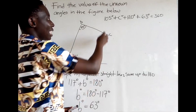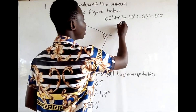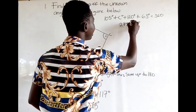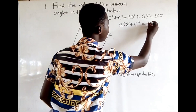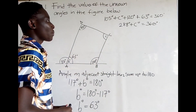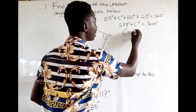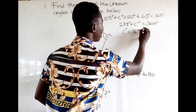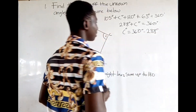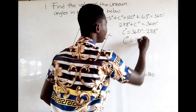When we add 105 plus 120 plus 63 we get 288. So 288 plus c degrees is equal to 360 degrees. Making c the subject: c is equal to 360 degrees minus 288 degrees, which gives us c is equal to 72 degrees.